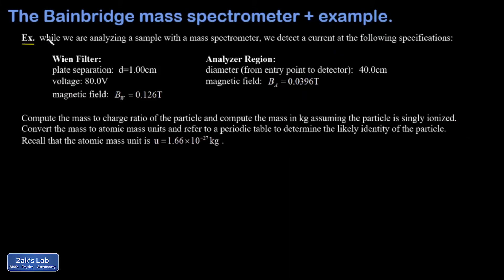Let's wrap things up with an example. We're told that while we're analyzing a sample with a mass spectrometer, we detect a current at the following specifications. Again, that means a beam of ions is hitting the detector.